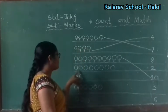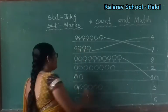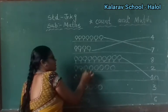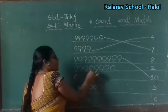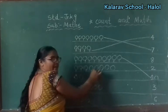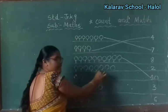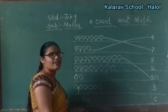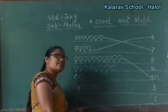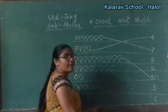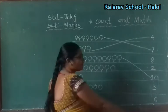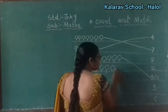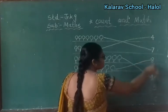Now let's count this line: 1, 2, 3, 4, 5, 6, 7, 8. How many circles? There are 8 circles. So find out the number 8, children. Here — yes, this one is 8. So match it.